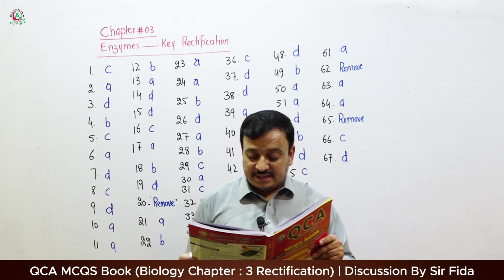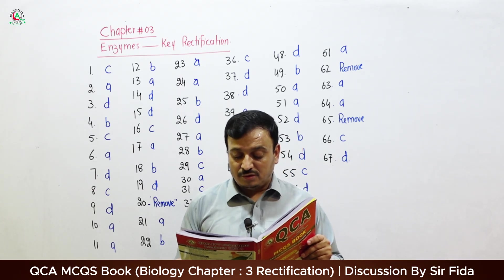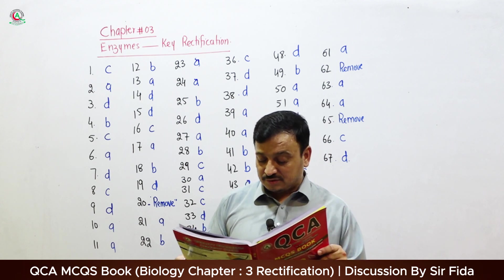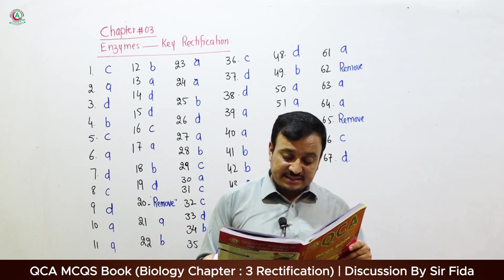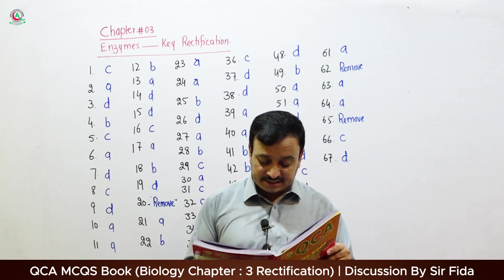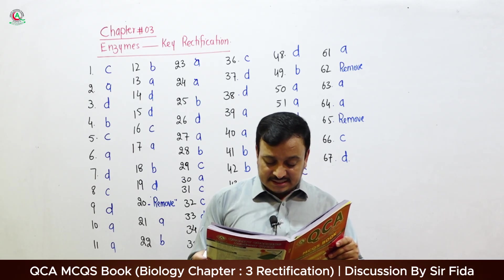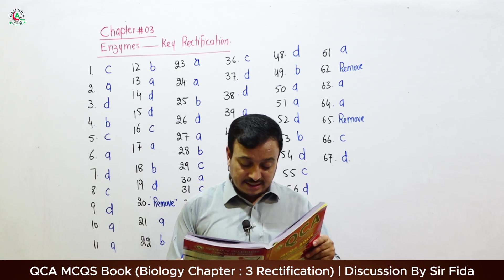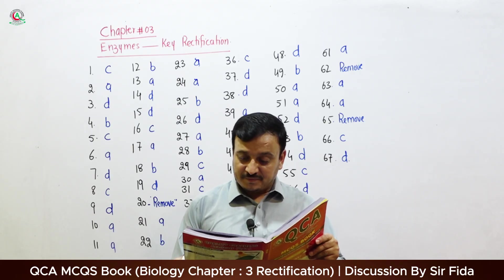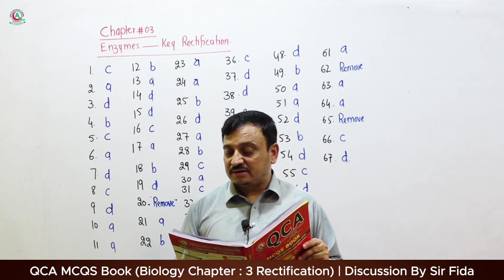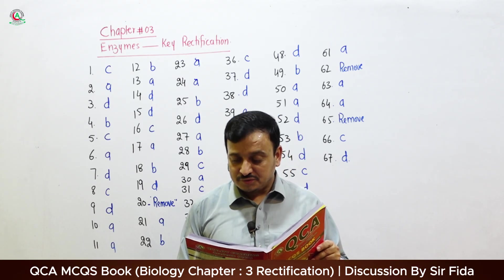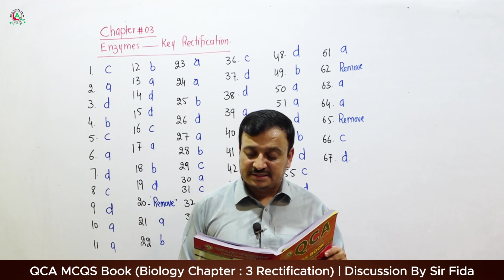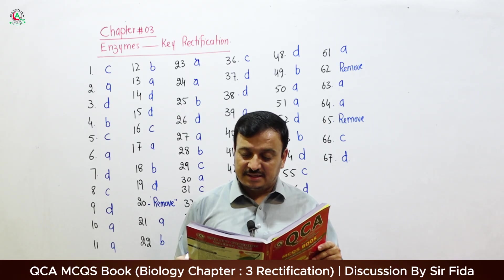Question 61: When the end product of an enzyme increases, decreases, or slows its own production, it is called — A: Feedback inhibition. Question 62: Allosteric site is also called — please replace this question. Question 63: Enzyme can proceed — A: Single reaction. Question 64: Each cell contains — A: 2000 to 3000 enzymes. Question 66: The active site of an enzyme consists of — 3 to 12 amino acids. Question 67: The type of amino acid present in the active site of an enzyme is — correct answer D: All of these.